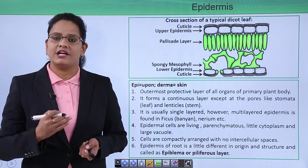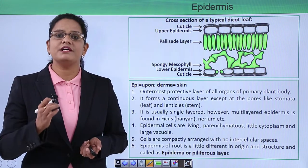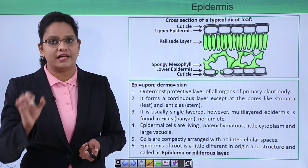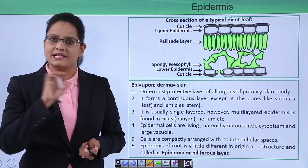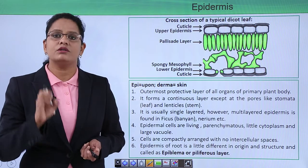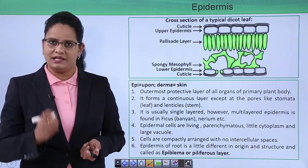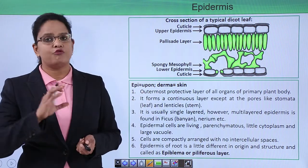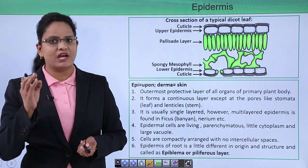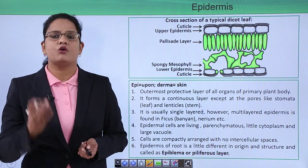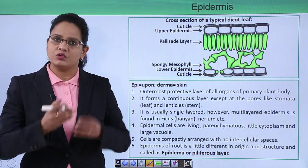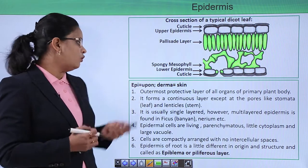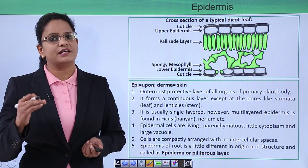The epidermis is the first line of defense of the plant body. Just as skin is made up of different layers, the epidermis is the outer protective covering — a thin, single layer of parenchymatous cells. Being parenchymatous, these cells are living and compactly arranged. It forms the outermost protective layer of all organs of the primary plant body. As the plant grows in thickness and becomes woody, cork replaces the epidermis as the outer covering.